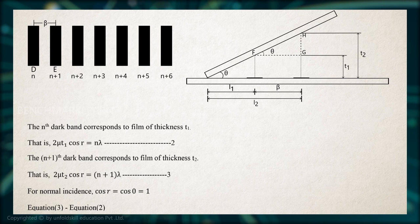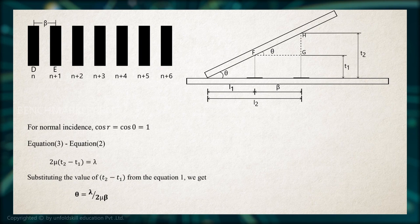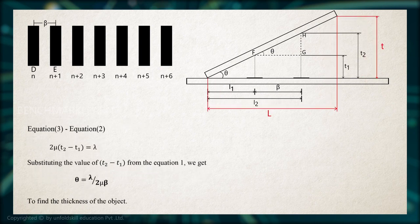Equation 3 minus equation 2 becomes 2 mu times T2 minus T1 equal to lambda. Substituting the value of T2 minus T1 from equation 1, we get theta equal to lambda divided by 2 mu beta.